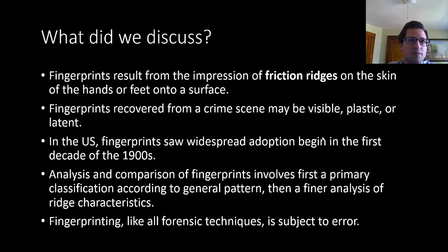So today we discussed a number of things. We saw that fingerprints result from the impression of friction ridges on the skin of the hands or feet onto a surface. We saw that fingerprints recovered from a crime scene may be visible, plastic, or latent. We saw that in the US fingerprints saw widespread adoption beginning in the first decade of the 1900s. We saw that analysis and comparison of fingerprints involves first a primary classification according to general pattern, then a finer analysis of ridge characteristics. And we saw finally that fingerprinting, like all forensic techniques, is subject to error.